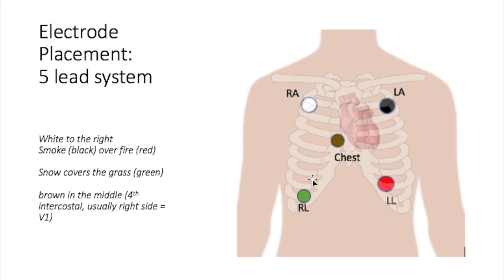The saying for the five lead system is: snow over grass, smoke over fire, and the brown lead goes in the middle. So: snow over grass, smoke over fire, and poop goes in the middle — those are our placement mnemonics.